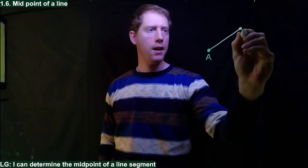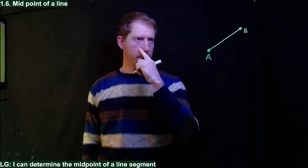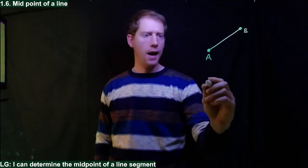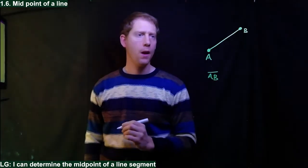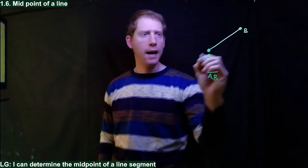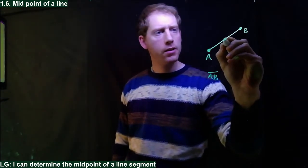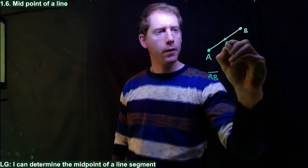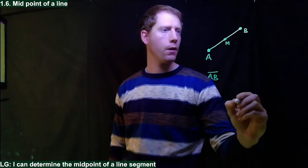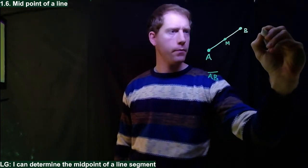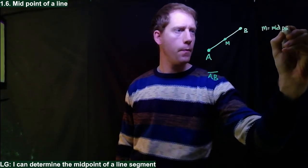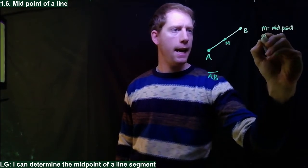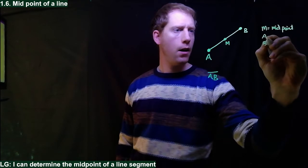We say this is point A and this is point B. The length of the line you would just say AB and you would put a little hat on it. But we want to find what are the coordinates of the midpoint. We'll call that M, so M is equal to the midpoint and then A and B are the endpoints.